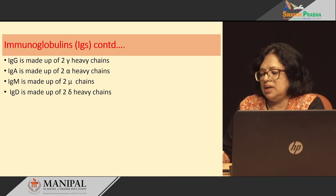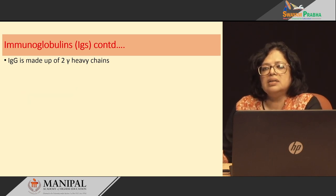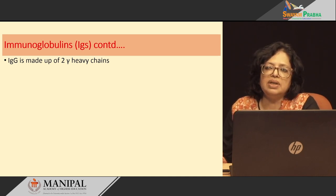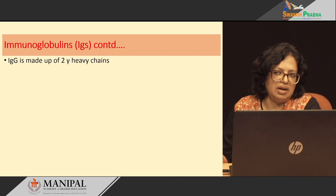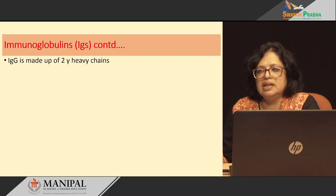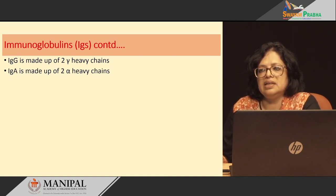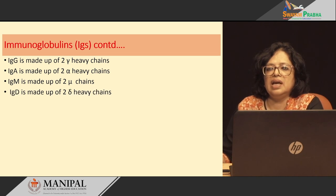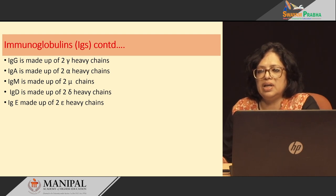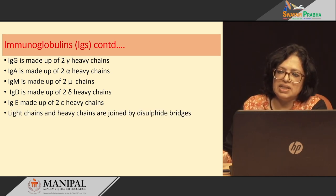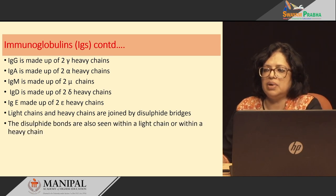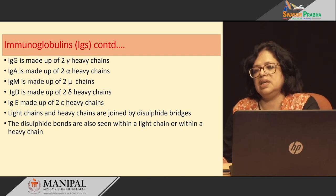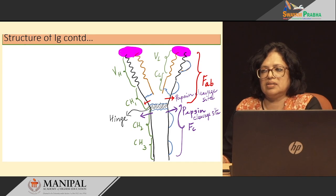The 5 immunoglobulin types are: IgG, made up of 2 gamma heavy chains; IgA, made up of 2 alpha heavy chains; IgM, made up of 2 mu heavy chains; IgD, made up of 2 delta heavy chains; and IgE, made up of 2 epsilon heavy chains. The light chains and heavy chains are joined by disulphide bridges, which are also seen within the light chain and within the heavy chain.